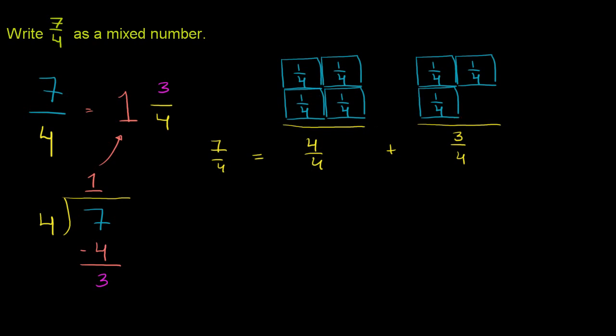Now, what is 4 fourths? What is 4 fourths? 4 fourths is 1 whole. So you have 1 whole with 3 fourths left over. So you end up with 1 and 3 fourths. So that is the 3 fourths part. And that is your 1 whole.